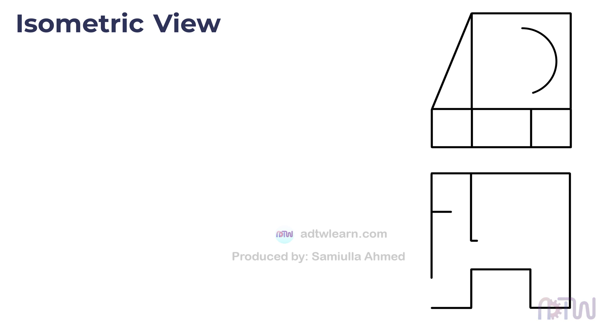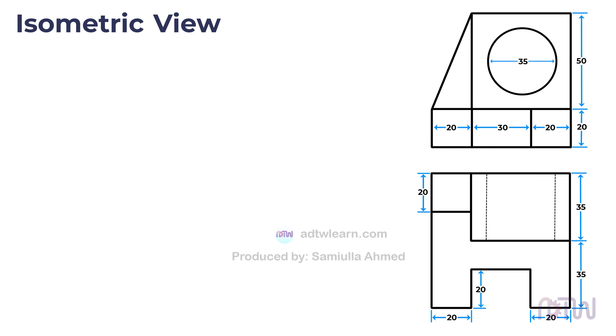These are the orthographic projections of the object. To construct the isometric view or 3D view of the object, we first need to create the isometric axis.